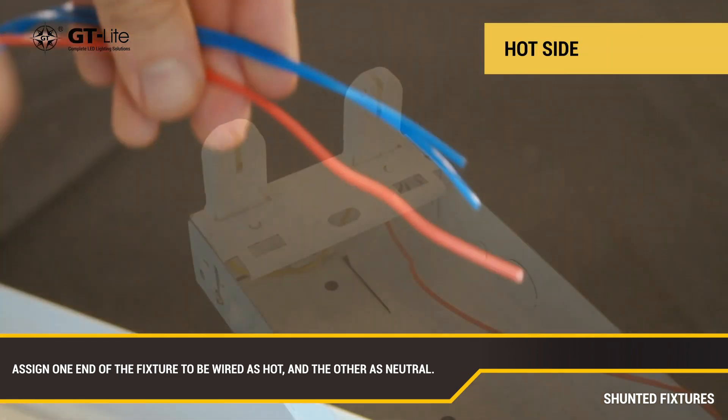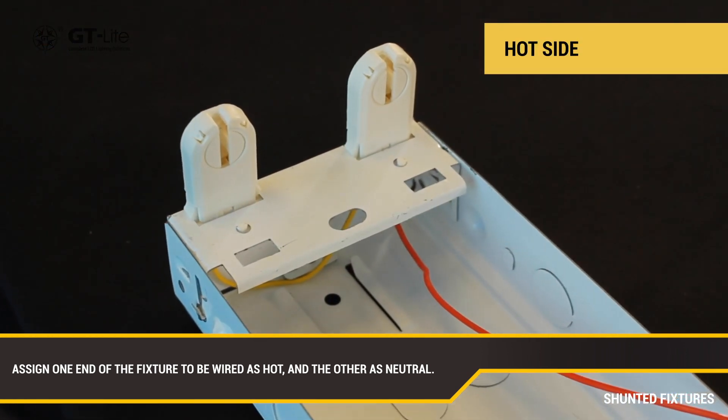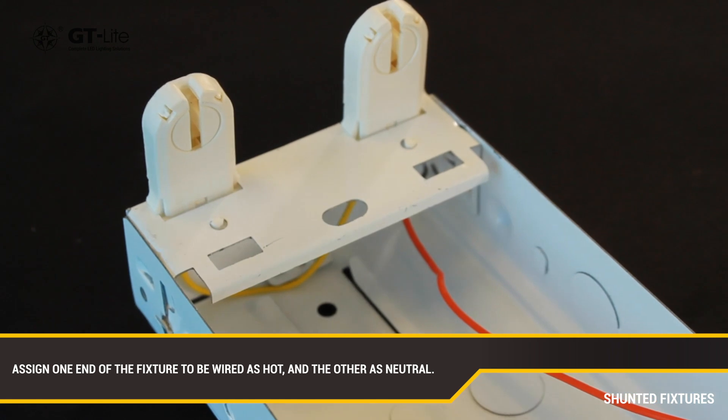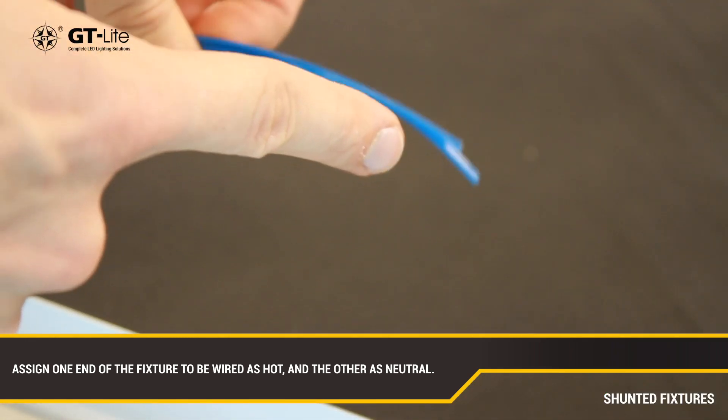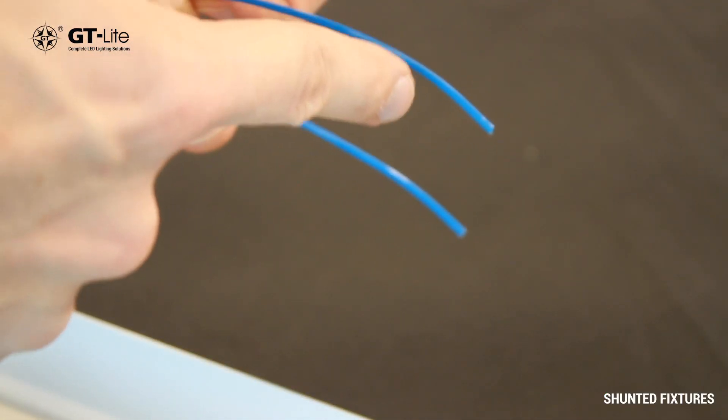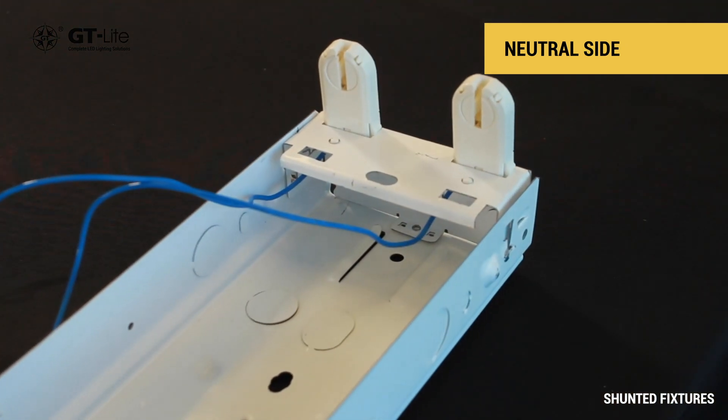Designate one side of your fixture to be wired as hot and the other side of the fixture to be wired as neutral. For example, we will be using the left side as our hot side and the right side as our neutral side.